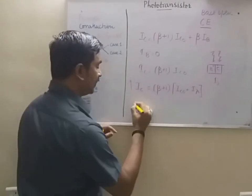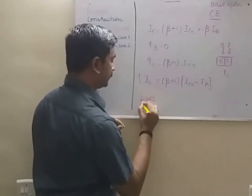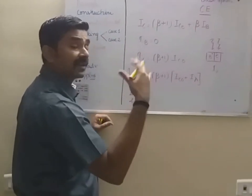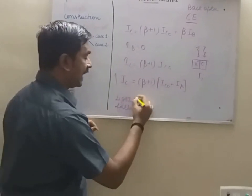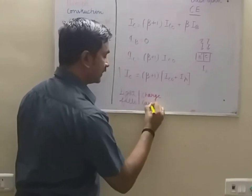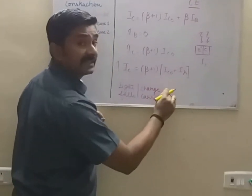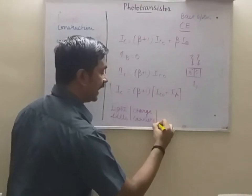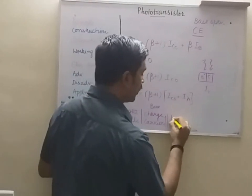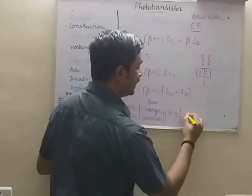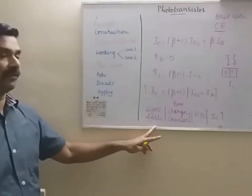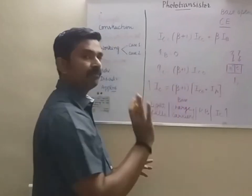To summarize case 1: light falls, it has enough energy to knock out electrons from the outermost shell, charge carriers get developed in the base, charge carriers in the base increase, and because of the reverse bias the collector current increases.